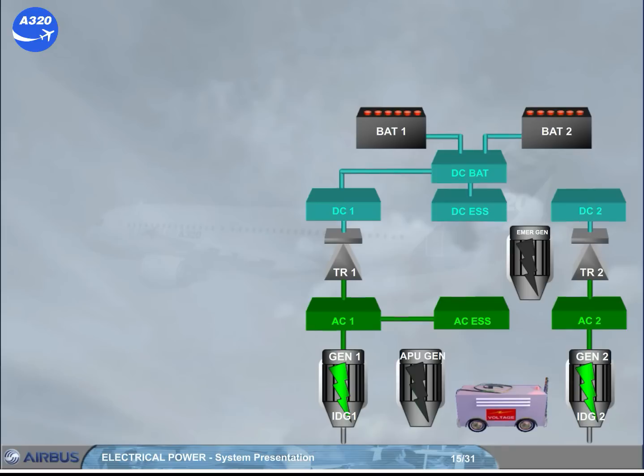The electrical system also has an essential transformer rectifier, essential TR. The essential TR can power the DC essential bus from the emergency generator in case of severe electrical failure, or from the AC essential bus in case of a TR1 or TR2 failure. Note, in this case, the DC bus 1 or 2 is transferred to the DC bus 2 or 1 via the DC BAT bus.